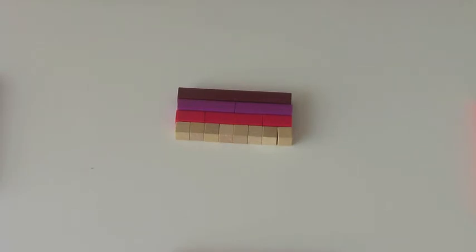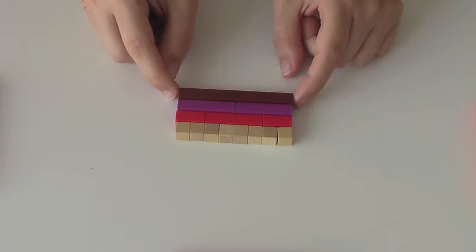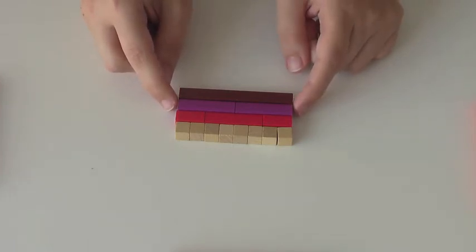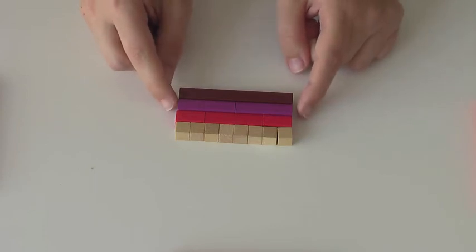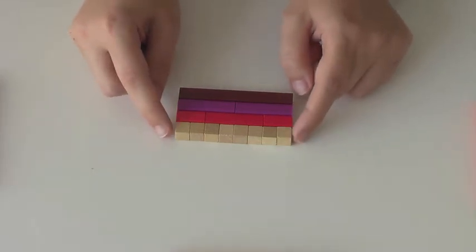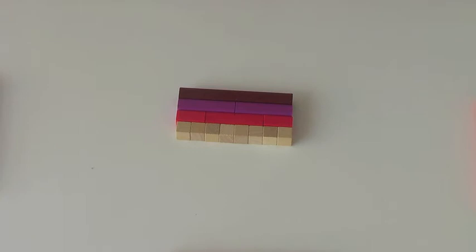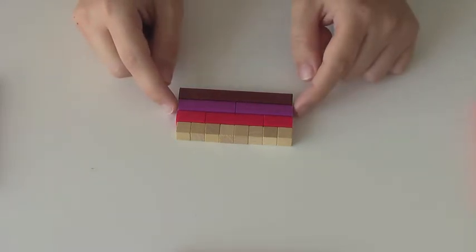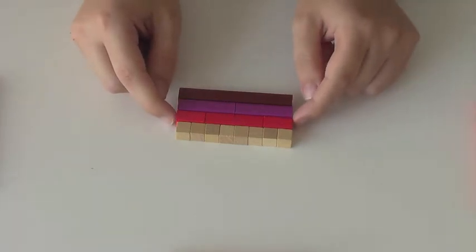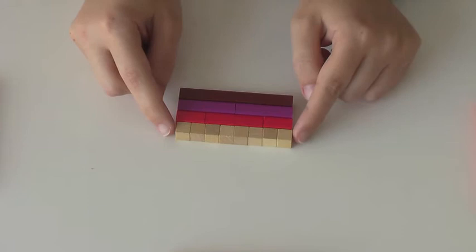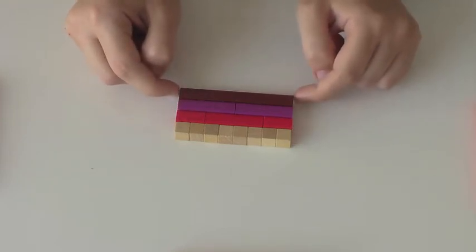Now before you even begin to teach multiplication, what you should do is something like this. Have the child or children take out an eight rod and ask them to make as many trains of one color as they can underneath it that exactly equal eight. So we have a train of purple rods and a train of red rods and a train of white rods. You don't have to say anything about multiplication or division yet as you do this activity, but what they're beginning to intuit is that two fours is the same as eight, and four twos is the same as eight, and eight ones is the same as eight.